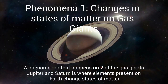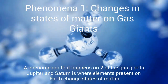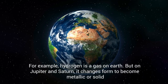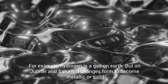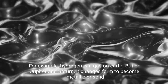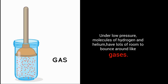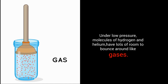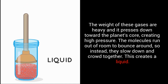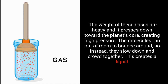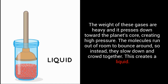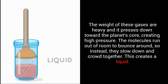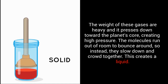A phenomenon that happens on two of the gas giants, Jupiter and Saturn, is where elements present on Earth change states of matter. For example, hydrogen is a gas on Earth, but on Jupiter and Saturn it changes form to become metallic or solid. Under low pressure, molecules of hydrogen and helium have lots of room to bounce around like gases. However, the weight of these gases is heavy and it presses down towards the planet's core, creating high pressure. The molecules run out of room to bounce around, so instead they slow down and crowd together, creating a liquid.